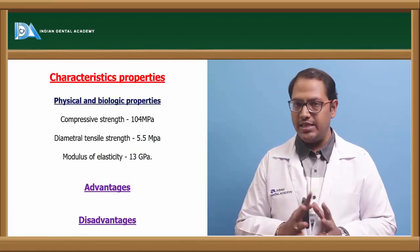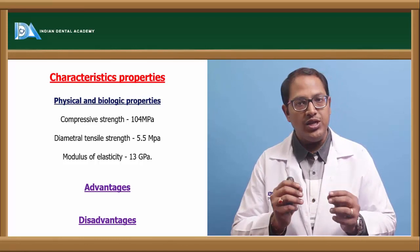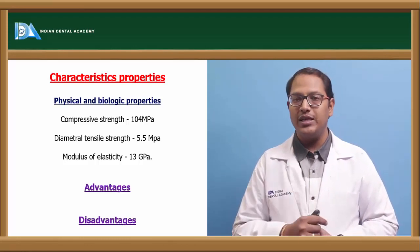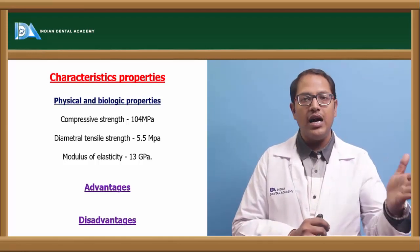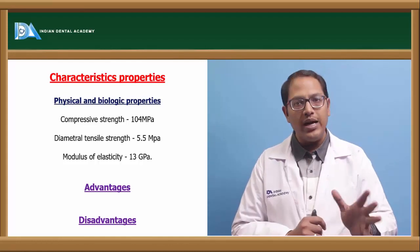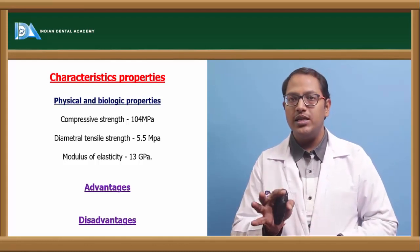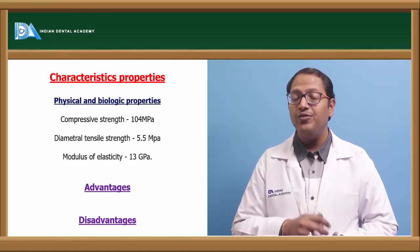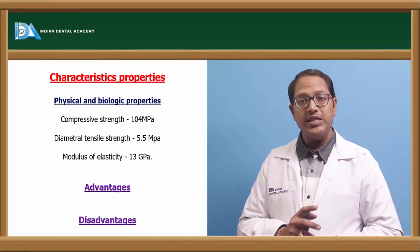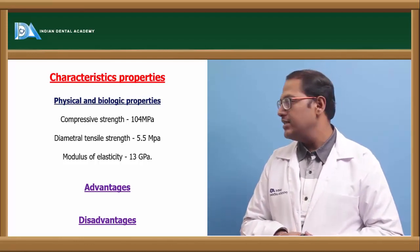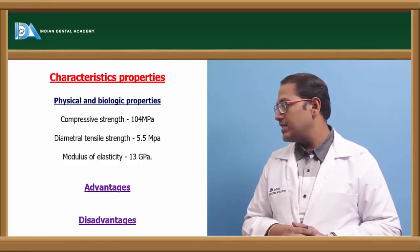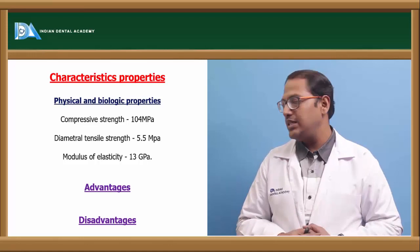Regarding characteristic features: immediately after placement, the pH of zinc phosphate is 2.4 — very acidic. After about one hour it rises to 4.2, and within 48 hours reaches near neutrality. While acidic, it is harmful to the pulp, making it not very biocompatible. The compressive strength is 104 MPa, diametral tensile strength is 5.5 MPa, and modulus of elasticity is 13 GPa.